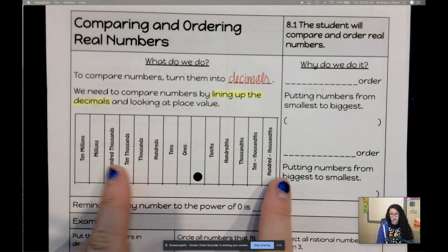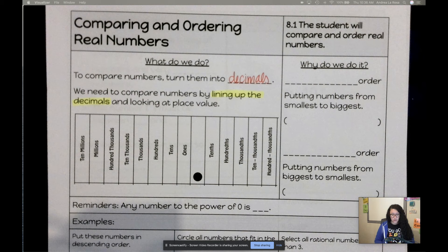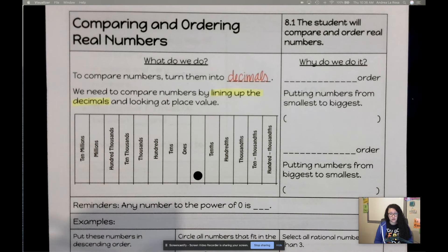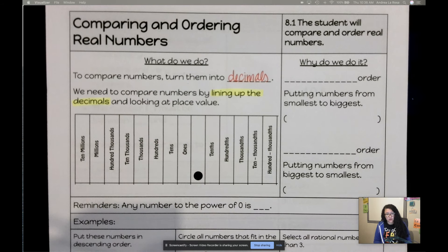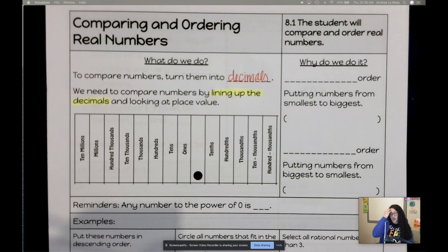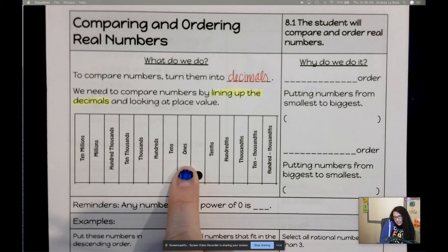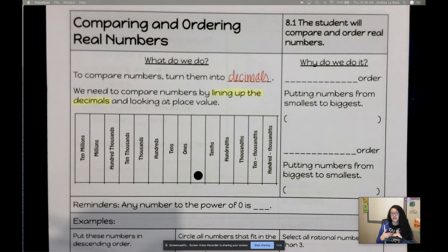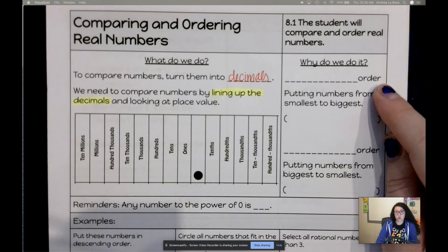The bigger the number is, the further out it goes to the left of the decimal. The smaller the number, the less far out it goes — maybe it's just a decimal with nothing to the left. Lining things up is really important for comparing them.